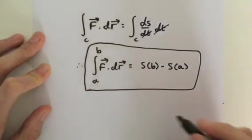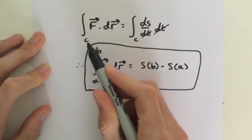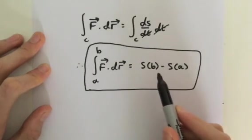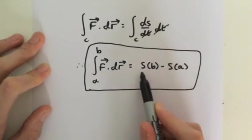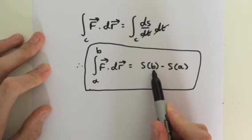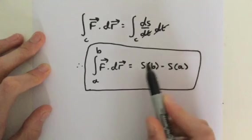So remember, curve C is any curve between our points A and B. So basically, the end result just depends on our two fixed points, B and A. As you can see, it does not depend on the curve.